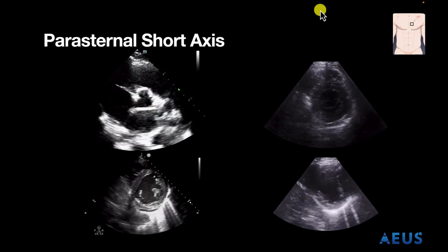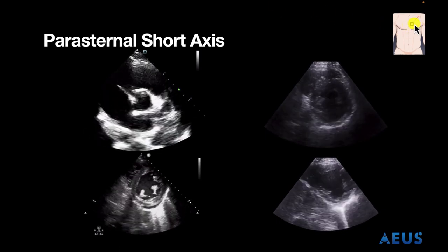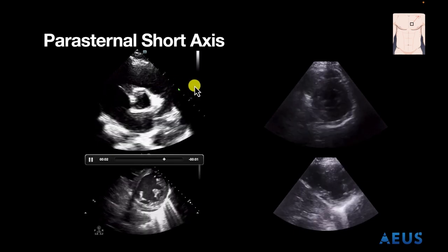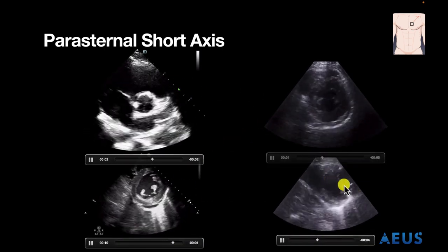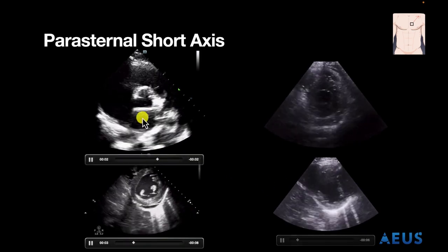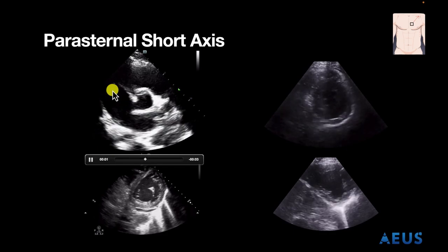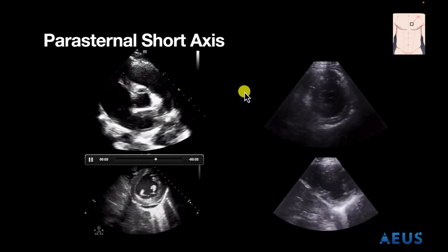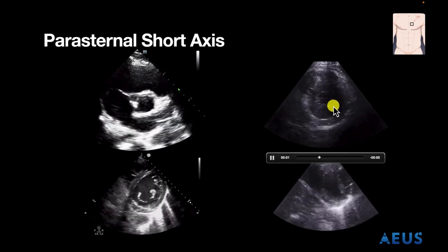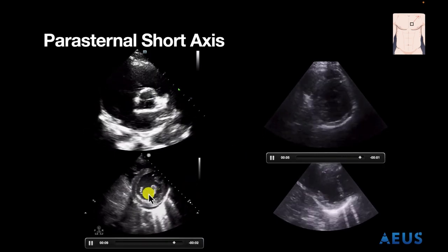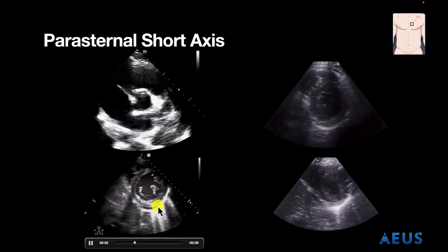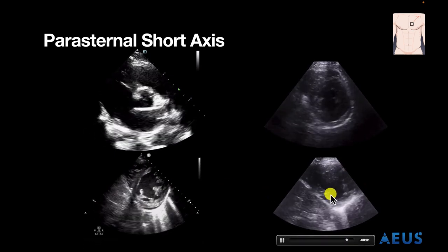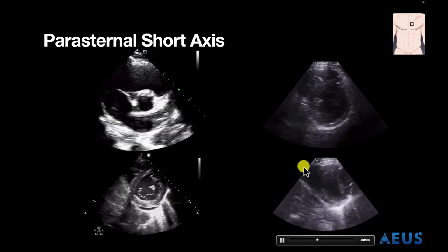Now let's look at our parasternal short axis. The indicator is in the 4th or 5th intercostal space pointing towards the left shoulder. We will start towards the base of the heart and work our way down towards the apical portion. We have our left atrium, right atrium, tricuspid valve, and right ventricle. You can actually see the pulmonic valve coming in and out of view here. As we work our way down towards the apex, you can see the mitral valve in a classic fish mouth view. As we go further down, we can see our papillary muscles, and this is the left ventricle adjacent to the right ventricle. As we come towards the apex, we have our right ventricle and left ventricle.